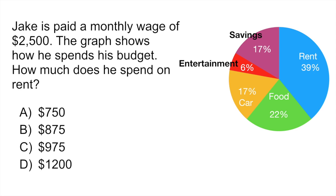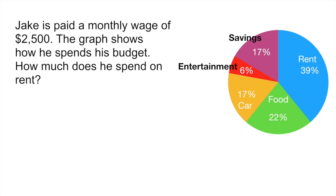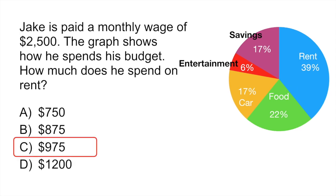The question says Jake is paid a monthly wage of $2,500. The graph shows how he spends his budget. How much does he spend on rent? So you look at your graph again and look for the slice which represents rent, which is the blue slice, 39%. We know he gets paid $2,500, so if he's spending 39% on rent, you would multiply that by 0.39 which gives you a total of $975. Your correct answer would be C.